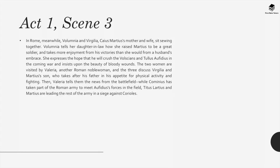Act 1, Scene 3: In Rome, Volumnia and Vergilia, Caius Martius's mother and wife, sit sewing together. Volumnia tells her daughter-in-law how she raised Martius to be a great soldier and takes more enjoyment from his victories than she would from her husband's embrace. She expresses hope that he will crush the Volscians and Tullus Ophidius in the coming war, and insists upon the beauty of bloody wounds. The two women are visited by Valeria, another Roman noblewoman, and the three discuss Vergilia and Martius's son, who takes after his father in his appetite for physical activity and fighting. Valeria then tells them news from the battlefield.